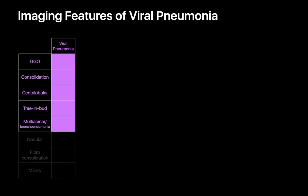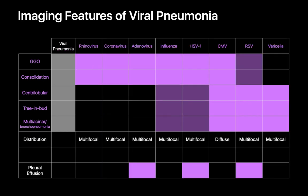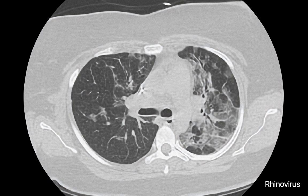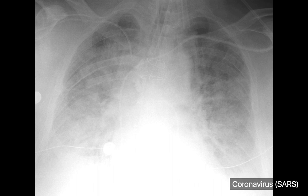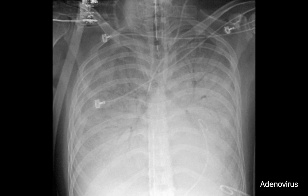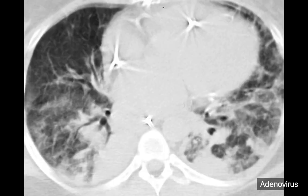While viral pneumonias can result in these five different features on imaging, different viral pneumonias tend to have different propensities for these five distinct imaging features. Rhinovirus, coronavirus, and adenovirus pneumonias generally prefer to present as consolidation or ground-glass opacities in a multifocal distribution, such as on these cases of rhinovirus pneumonia, SARS pneumonia, and adenovirus pneumonia.